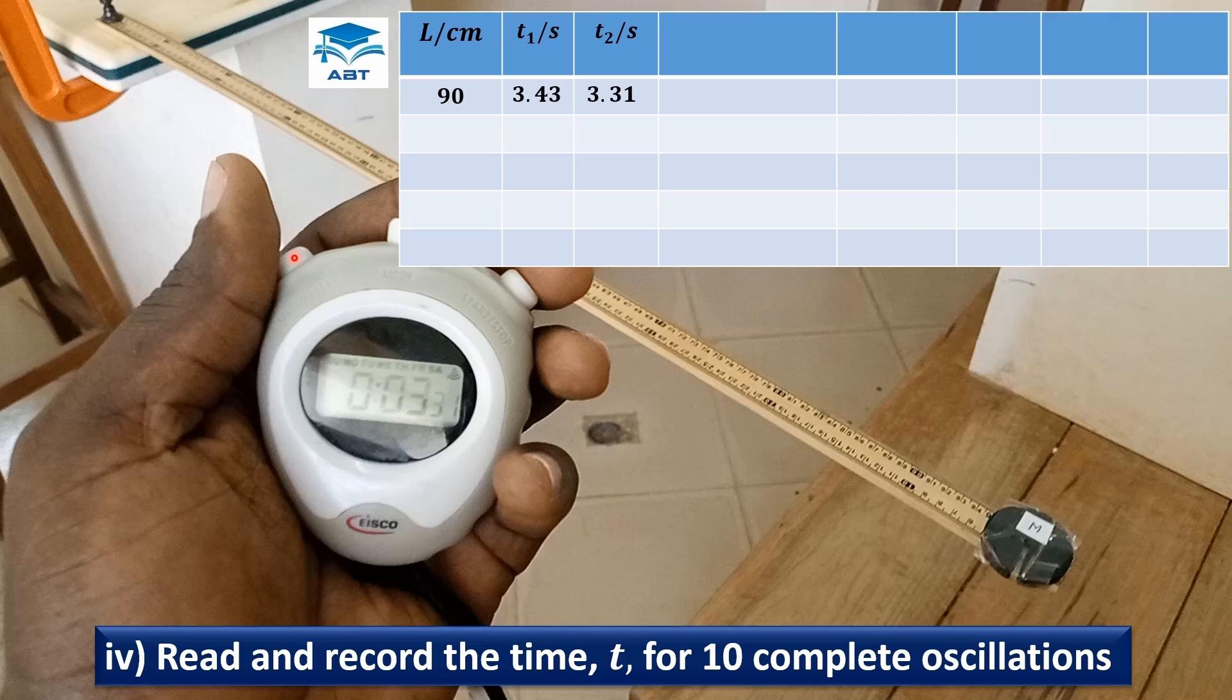So we find the average of the two times. That is 3.43 plus 3.31 divided by 2 in seconds, and we have 3.37 seconds.